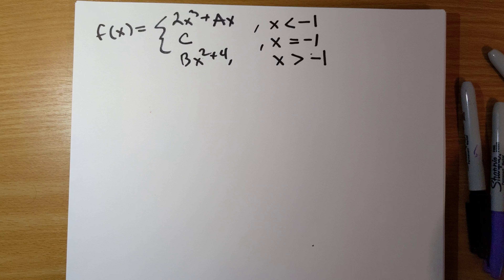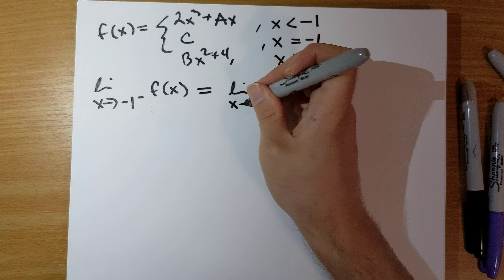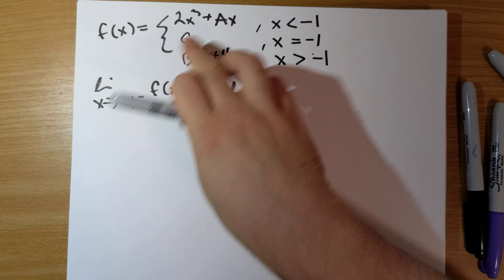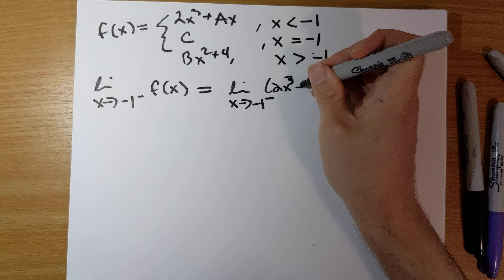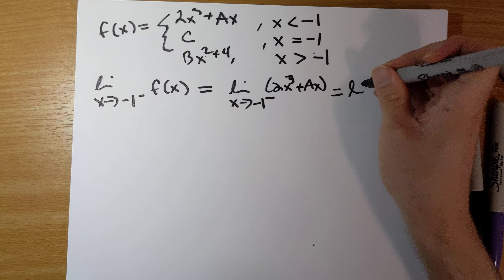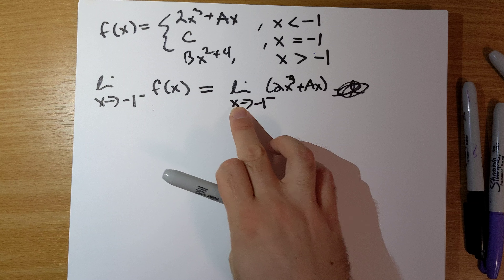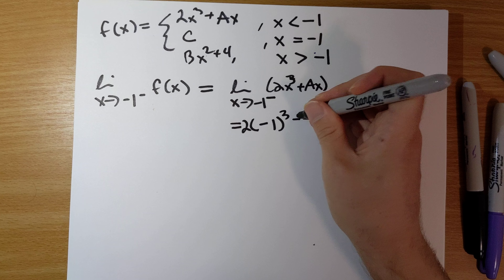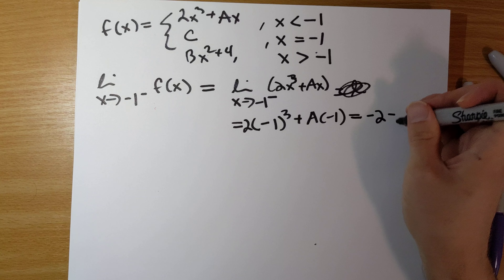Part a asks you to compute the limit as x goes to negative 1 from the left of f of x. Approaching negative 1 from the left means x is less than negative 1, so the formula we need is 2x cubed plus ax. There's no problem here — we can just substitute in negative 1 for x. So it's 2 times negative 1 cubed plus a times negative 1, which gives negative 2 minus a.